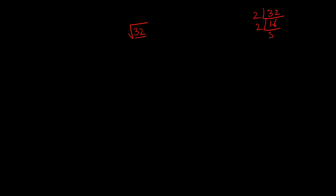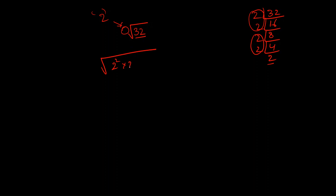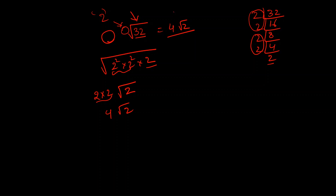Let us understand this with another example: the square root of 32. First, factorize 32 in prime factors: 32 = 2 times 16 = 2 times 2 times 8 = 2 times 2 times 2 times 4 = 2 to the power 5. Since there is no specific order mentioned, the order is 2, so we group in pairs. So root 32 equals the square root of 2 squared times 2 squared times 2. The two pairs of 2 come out as 2 times 2 = 4, and 2 remains under the square root. So root 32 = 4 root 2, a mixed surd.